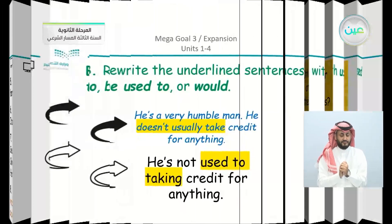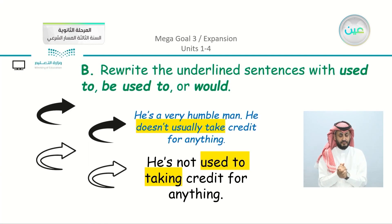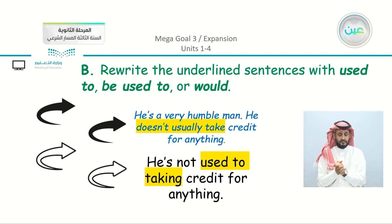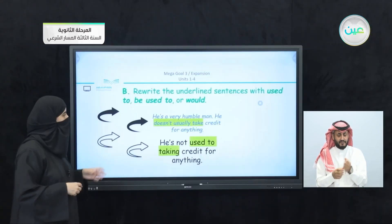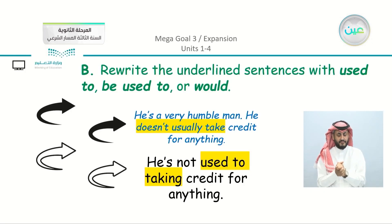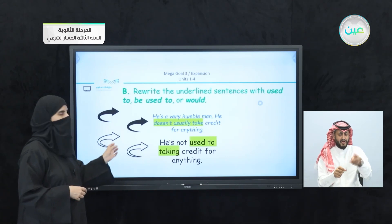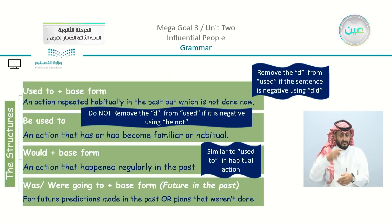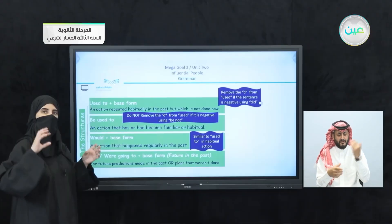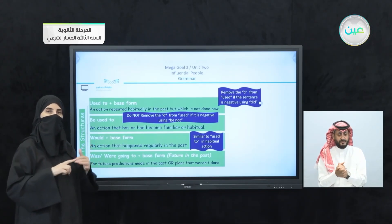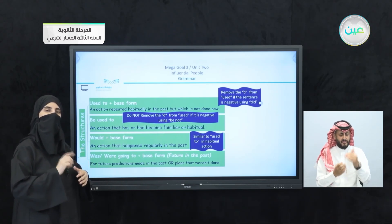We have finished the first exercise. Now coming to the second exercise: rewrite the underlined sentences using 'used to,' 'be used to,' or 'would.' For example: 'He's a very humble man. He doesn't usually take credit for anything' becomes 'He's not used to taking credit for anything.' Notice the verb changes from the base form 'take' to the gerund 'taking.' You can recall the grammar chart from unit 2 showing the differences among 'used to,' 'be used to,' 'would,' and 'was/were going to.'